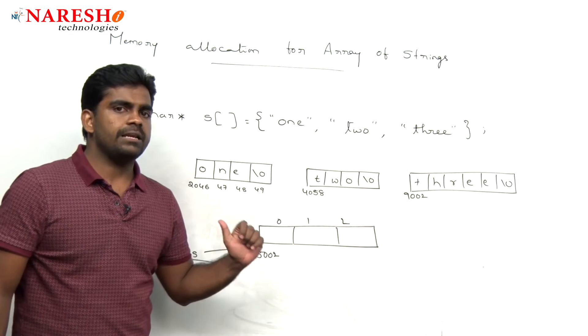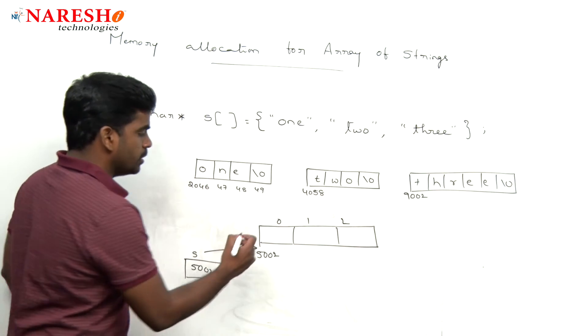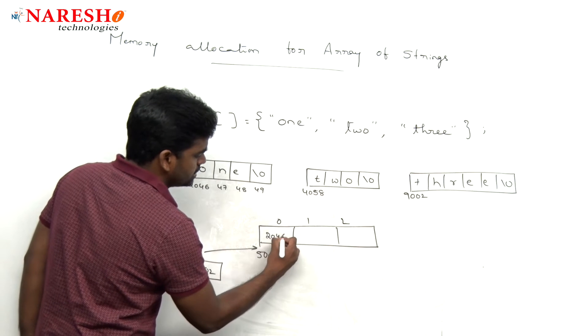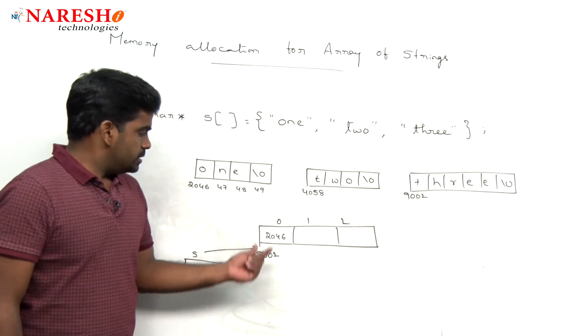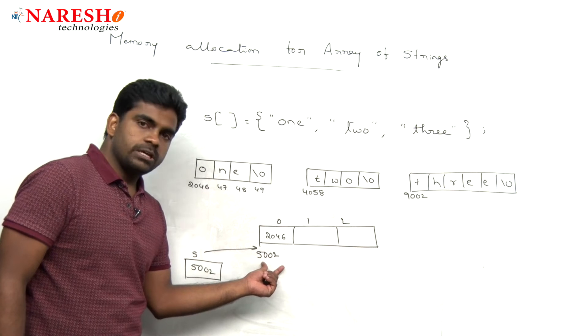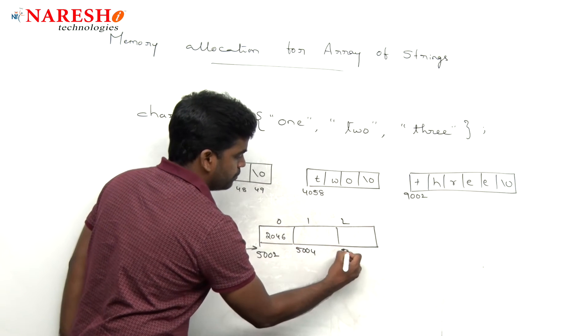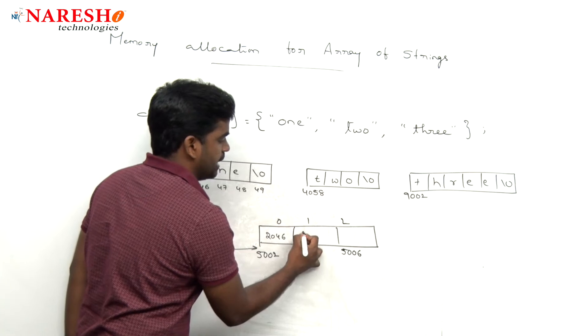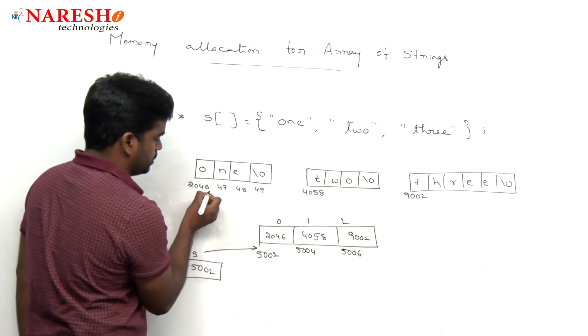In the first location, what is the value will be stored? The base address of this first string, 2046. The size of this address is like equal to that integer. Suppose 2 bytes. So, that next location is 5004, 5006. And here 4058 will be stored, 9002 will be stored.